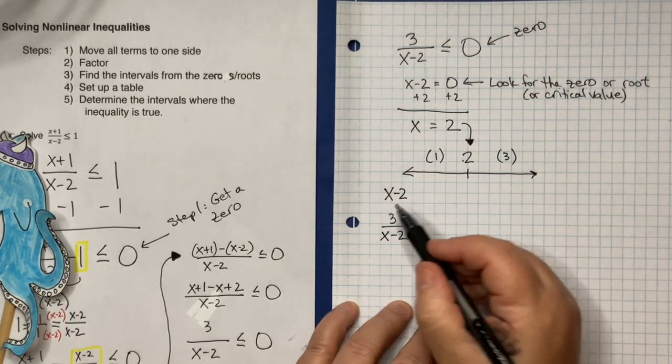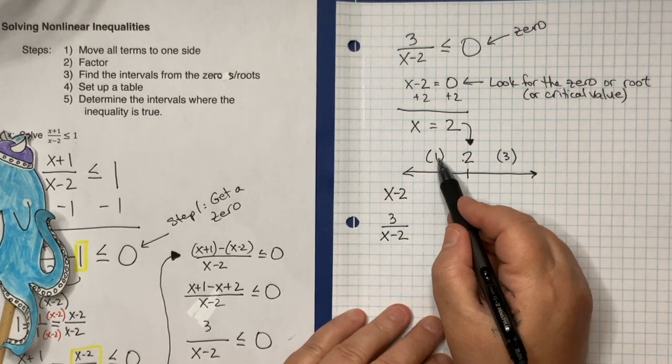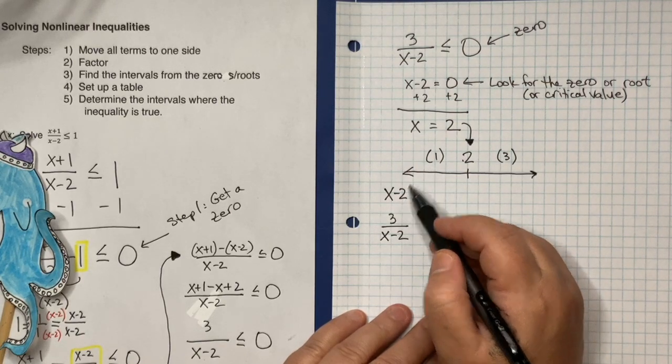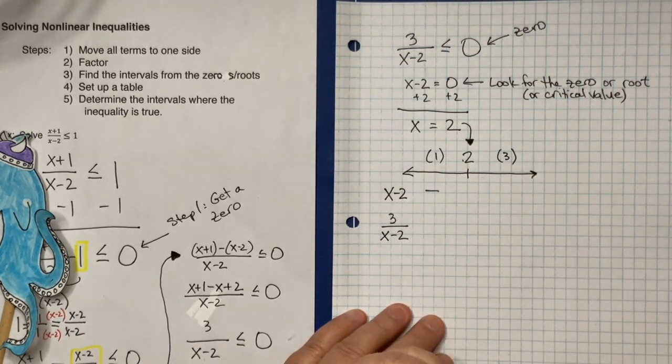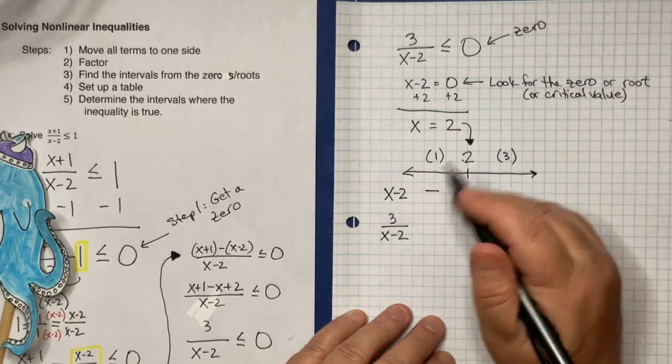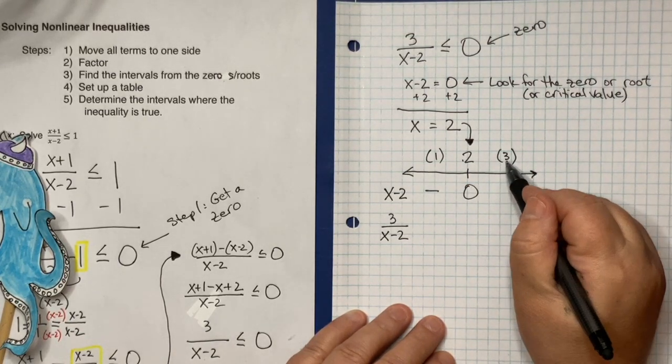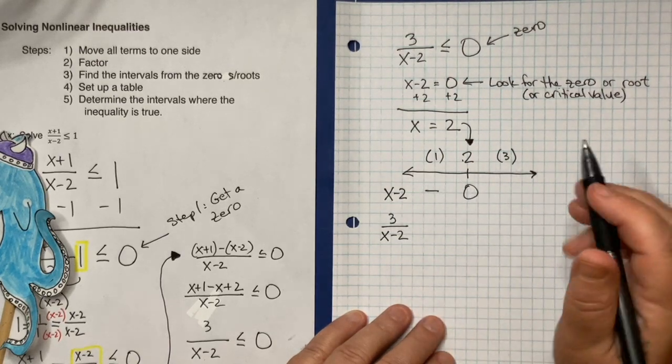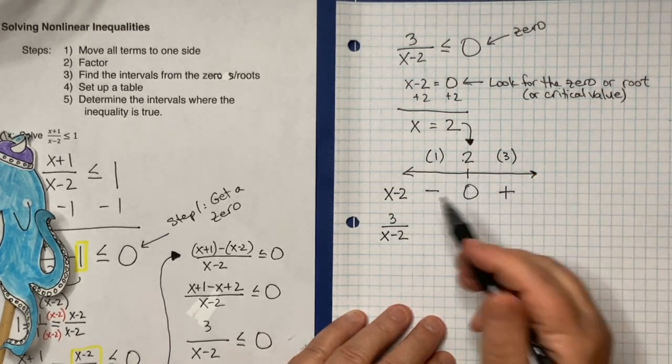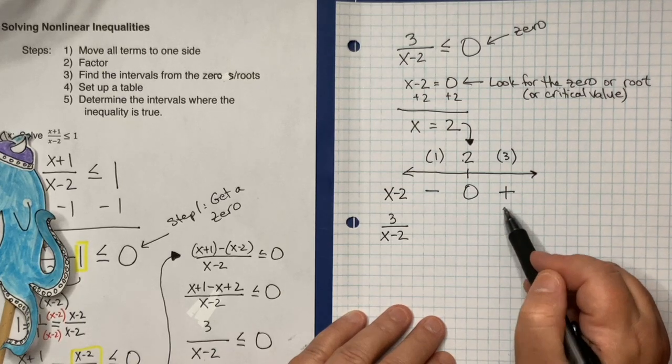And then I also want to look at what happens to 3 all over x minus 2. So x minus 2, if x is 1, 1 minus 2 is negative 1. This is going to be negative here. At 2, 2 minus 2 is 0. Nice and easy. That's the 0. I already knew that. And then if x is 3, 3 minus 2 is 1. That's positive. So I've got a negative, and then a 0, and then a positive.